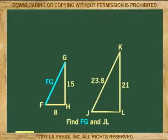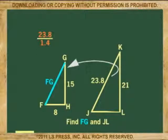To find FG, we have to do the reciprocal because now we are going from large to small. So instead of multiplying 23.8 by 1.4, we divide by 1.4. 23.8 divided by 1.4 is 17, the value of FG.